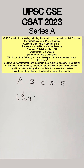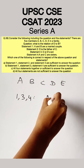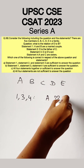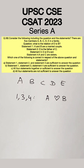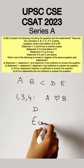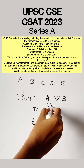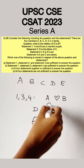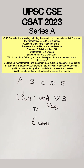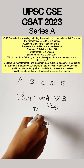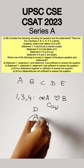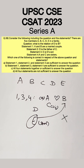The next option says statements 1, 3, and 4 are sufficient. Statement 1 says A and B are a married couple. Statement 3 says E is D's son. Statement 4 says A and C are sisters. Even with this, there is no connection established between E and B. So we can reject option B as well.